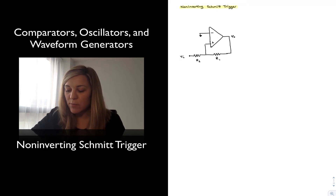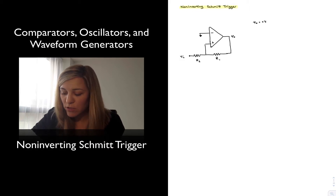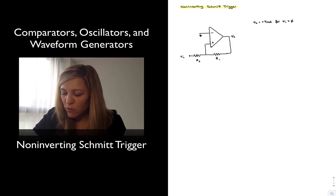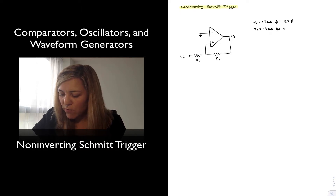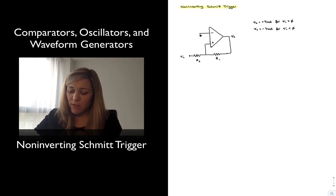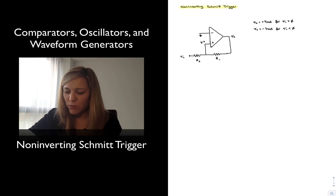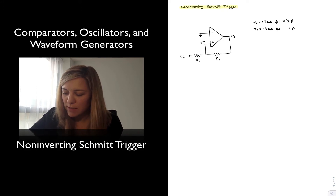Because the input signal is applied to the non-inverting input terminal, we know that as a general rule Vout is going to be positive and sitting at a positive saturation voltage — let's imagine this is an op-amp — for Vin values that are greater than zero or positive. And generally Vout will be sitting at negative saturation for Vin values that are less than zero or negative. More specifically, Vout will equal positive saturation when Vplus is positive and negative saturation when Vplus is negative.